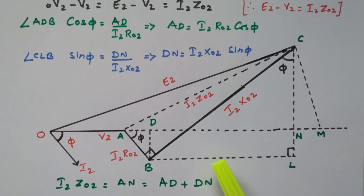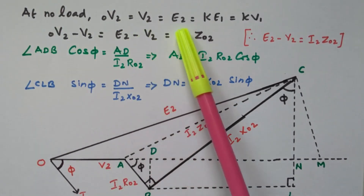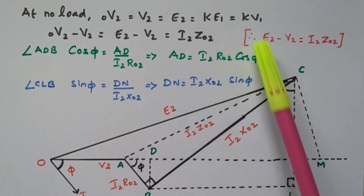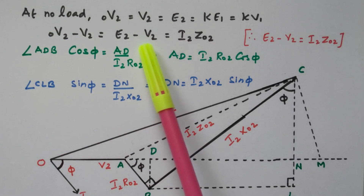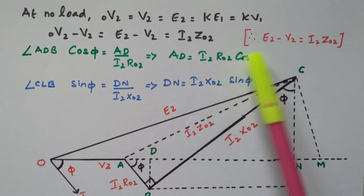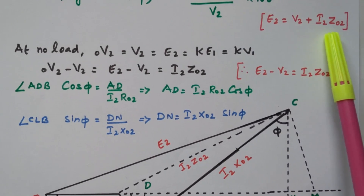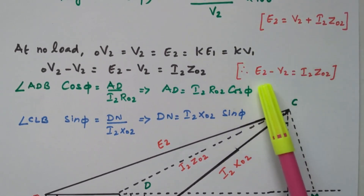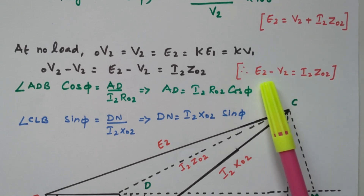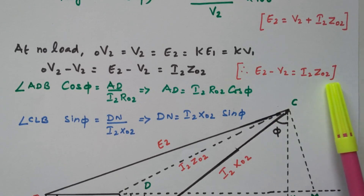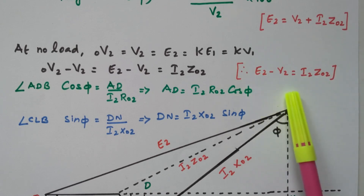Now we need to find the value of no-load voltage minus full-load voltage. At no load, V2-0 equals E2, which equals K·E1 or K·V1 based on the transformation ratio. So V2-0 minus V2 is nothing but E2 minus V2. From the basic equation E2 = V2 + I2·Z02, we can write E2 minus V2 = I2·Z02. So the difference between no-load and full-load voltage is represented as I2·Z02, and that is the regulation.